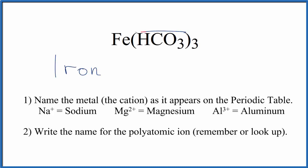Next, we're going to write the name of the polyatomic ion. This is the polyatomic ion here. We have three of them. You need to either memorize that HCO3 is the bicarbonate ion, or if you're allowed, look it up. So lowercase b. And so far, we have iron bicarbonate is the name for Fe(HCO3)3.